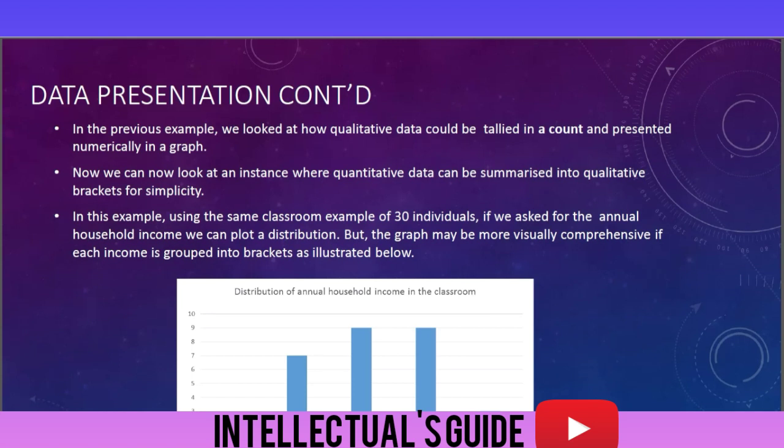Data representation: in the previous example, we looked at how qualitative data could be detailed in account and presented numerically in a graph. Now we can look at an instance where quantitative data can be summarized into a qualitative bracket for simplicity. In this example, using the same classroom example of 30 individuals, if we ask for the annual household income, we can plot a distribution. But the graph may be more visually comprehensive if each income is grouped into a bracket as illustrated below.